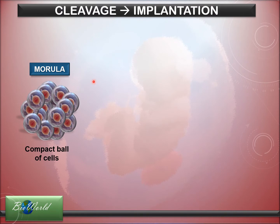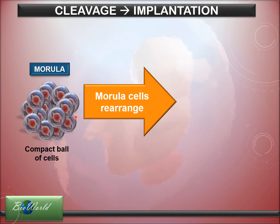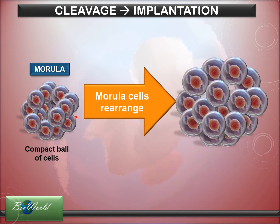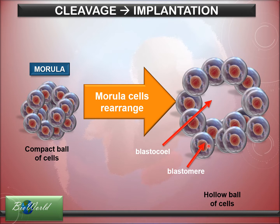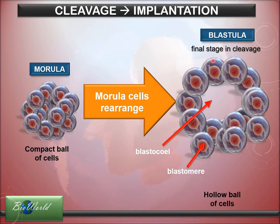The process of cleavage occurs in the fallopian tube. When the morula arrives at the end of the fallopian tube, it undergoes changes — the cells inside begin to rearrange so that the structure becomes a hollow ball of cells. The space is filled with fluid and is called the blastocoele; the cells are called blastomeres. This structure is called the blastula, and it is the final stage of cleavage just before entering the uterus to carry out implantation.